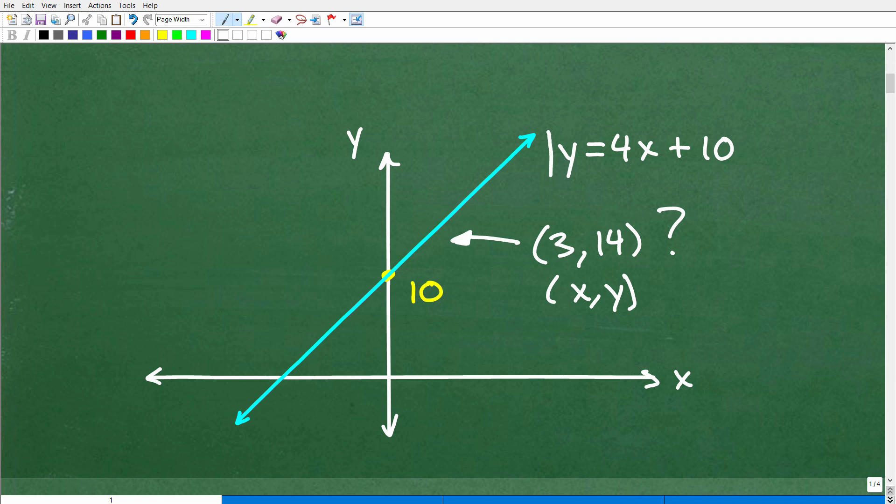So one way you could approach this is if you had graph paper, okay, you could actually graph this line if you know how to graph this line. And hopefully you do know how to graph this line. But you could graph this line on a nice sheet of graph paper, super accurate. And then you could plot this point (3,14) and just look. You could be like, okay, 1, 2, 3. Is it on the line or is it off the line? It can answer the question that way. But that's not the approach we want.